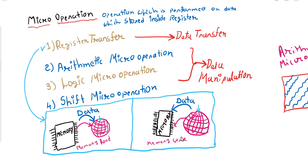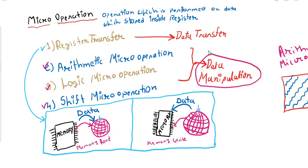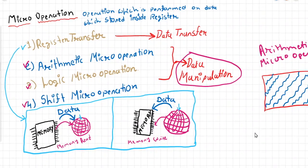So let us move forward. Arithmetic Micro operation, Logic Micro operation, and Shift Micro operation will be discussed one by one. These three Micro operations — Arithmetic, Logic, and Shift — help us to manipulate the data. Whatever data the CPU processes or manipulates, it does so using these three types of Micro operations.